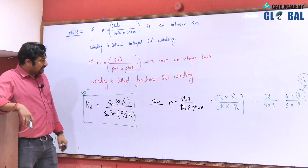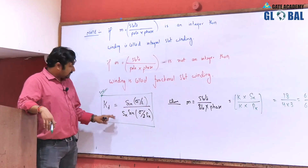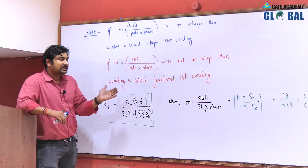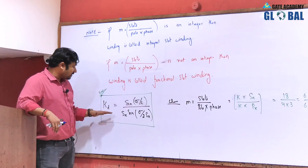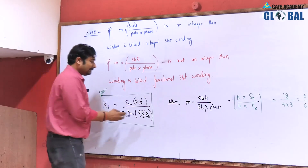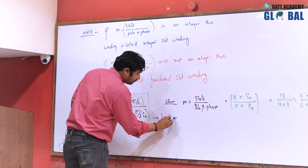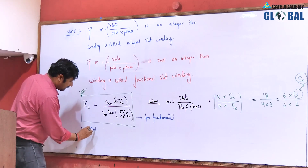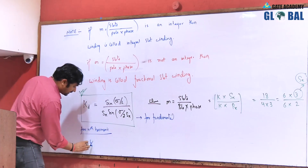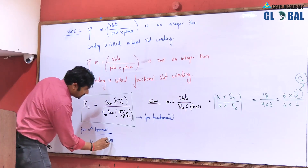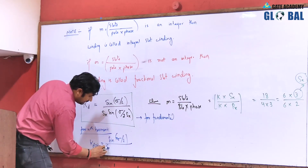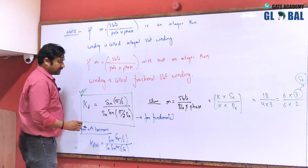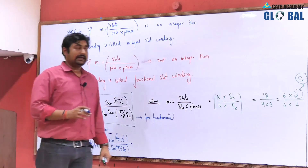This has been asked previously in GATE 1998. If the number of slots per pole per phase is not an integer, that winding is called fractional slot winding. For the nth harmonic of fractional slot winding, KD_n equals sin(n·σ/2) divided by S_k·sin(n·σ / 2·S_k).